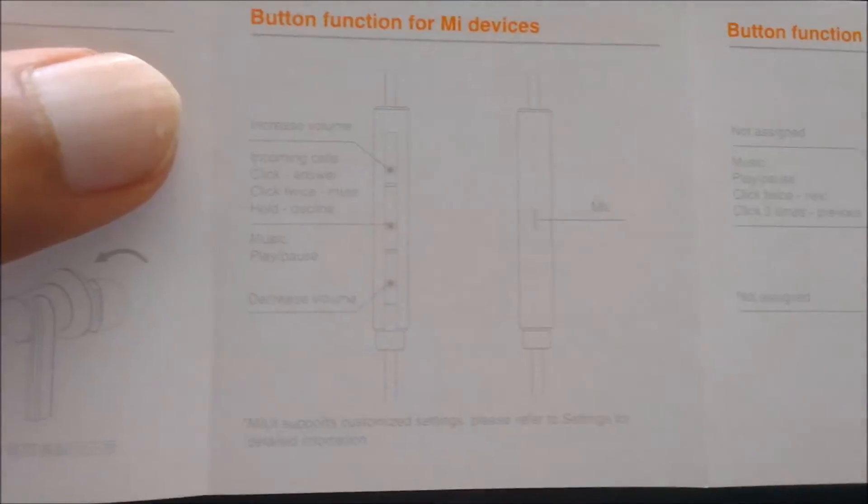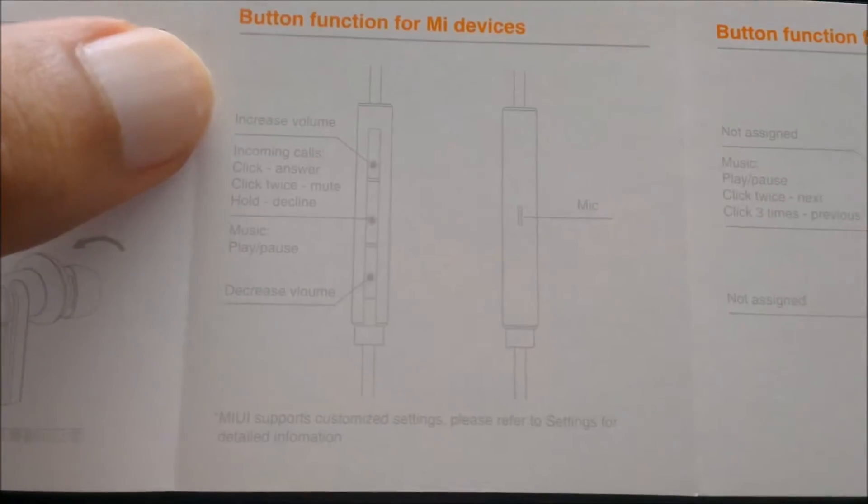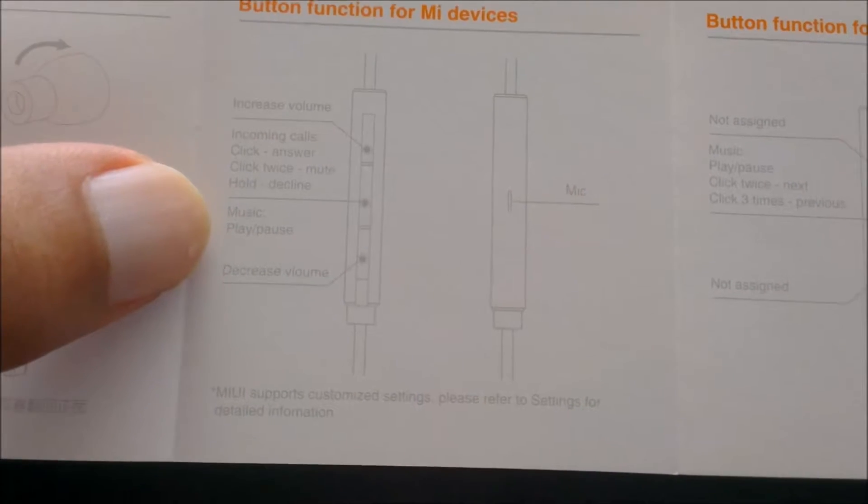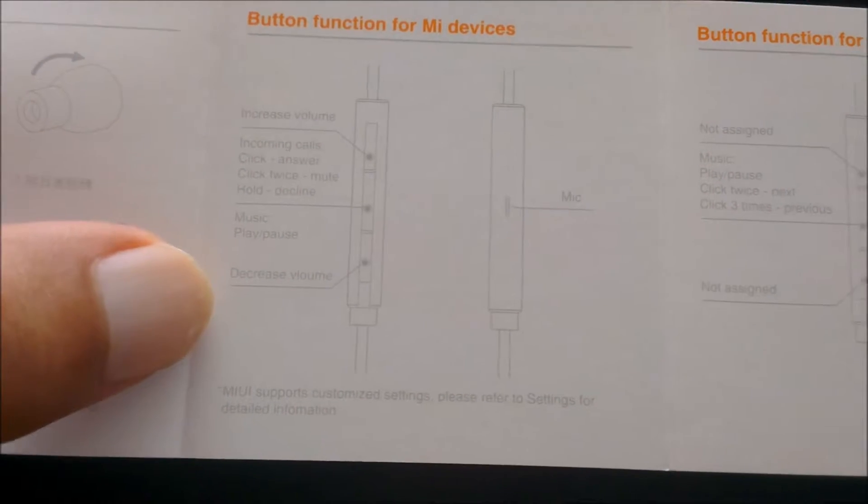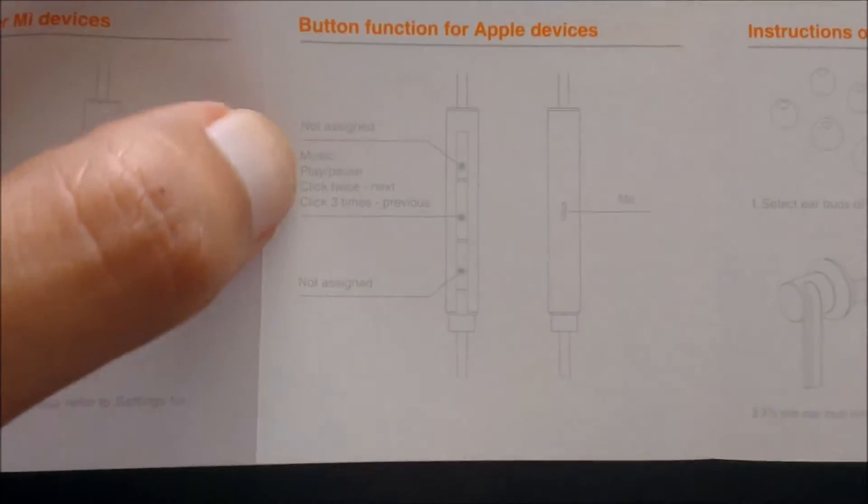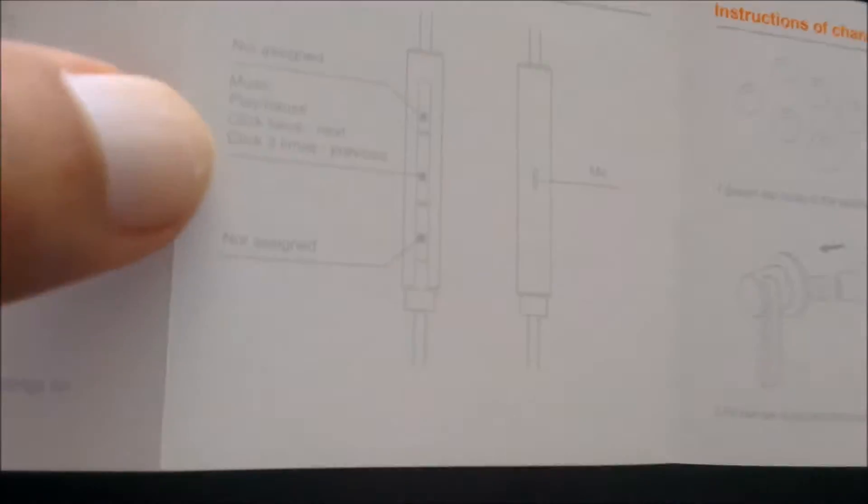Basically shows you the function of the button: increase volume, in call, mute, hold, pause, and decrease volume. The microphone. On the iPhone, you can't control the volume, but you can still pause, play music, and talk via the microphone. So on iOS, the only problem is that the volume button doesn't work.